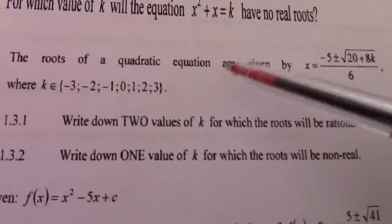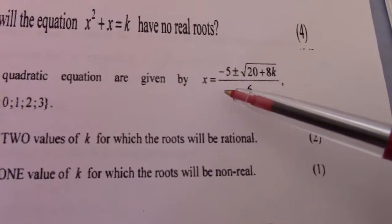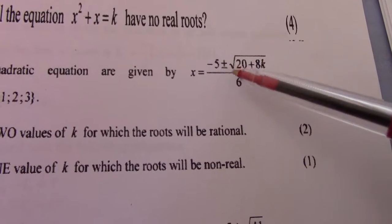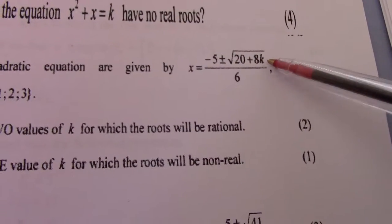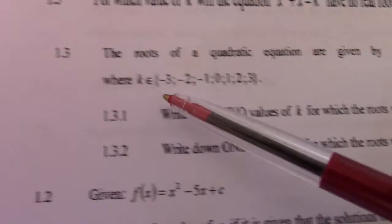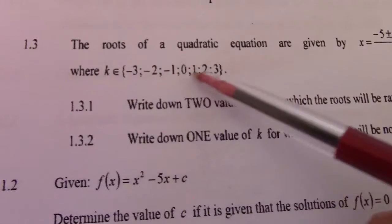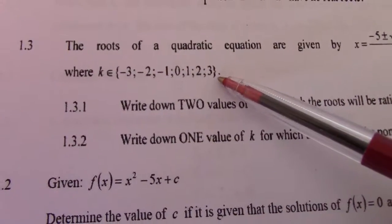Still nature of roots, the roots of our quadratic equation is given by x equal minus 5 plus minus square root 20 plus 8k divided by 6. Where k is an element of minus 3 all the way to positive 3.